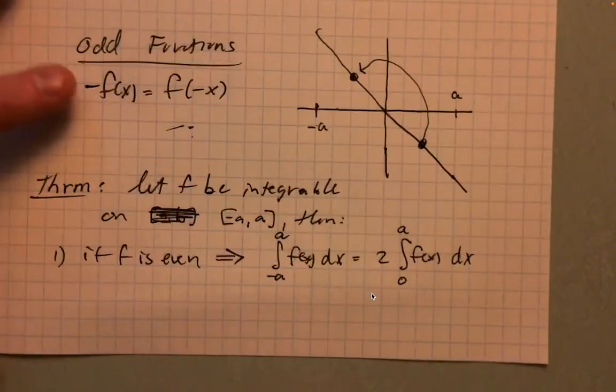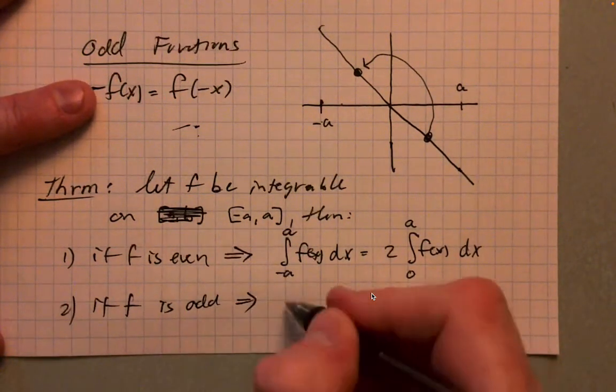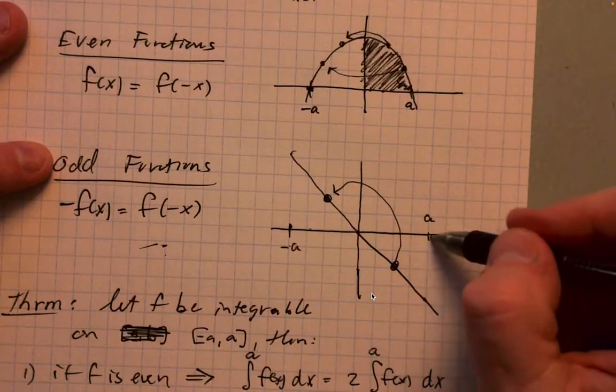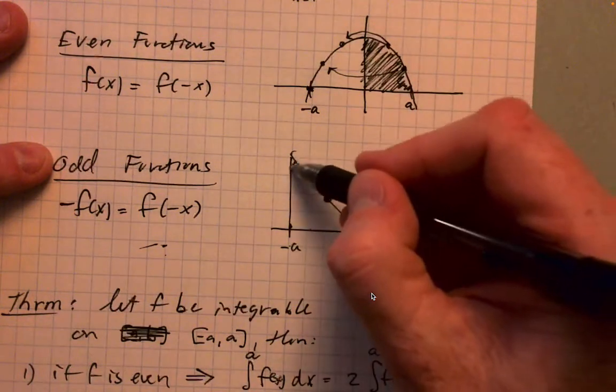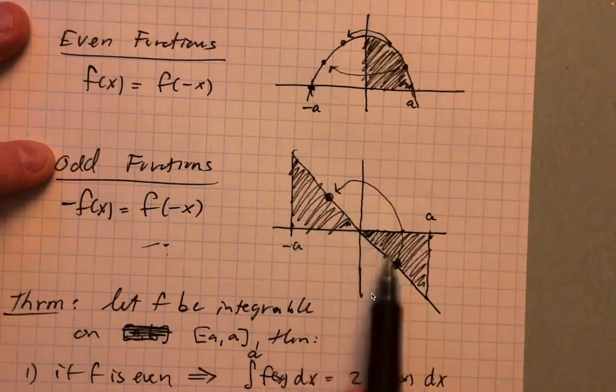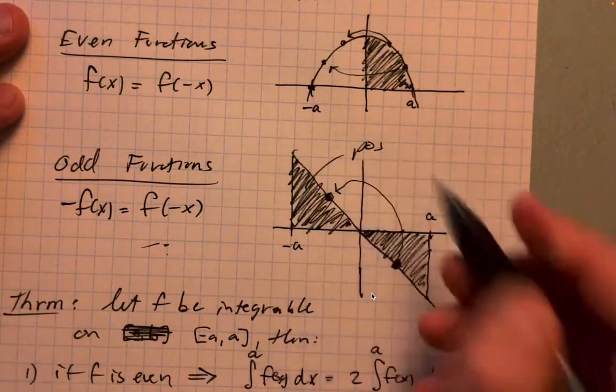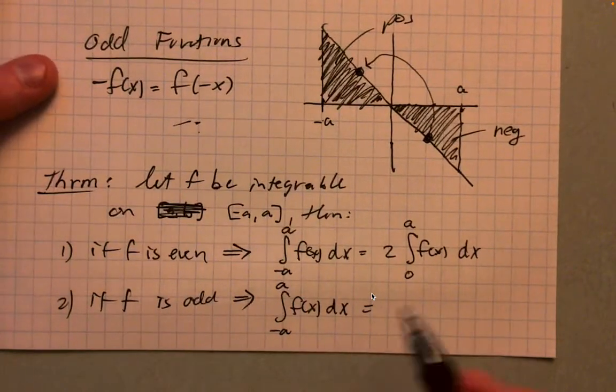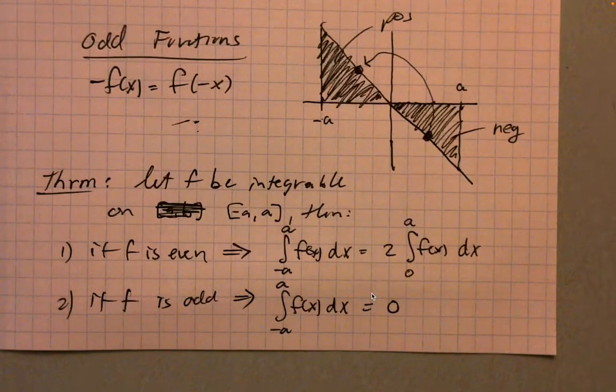What happens for odd functions? If f is odd, the integral from negative a to a of f of x dx. So think about what's going to happen here. You'll have this part here, that's zero to a, and this part here, that's negative a up to zero. They're going to be the same in terms of the absolute value of their area. But this is positive and this is negative. So they offset each other perfectly, and so that integral will be zero every time.